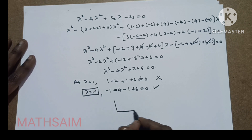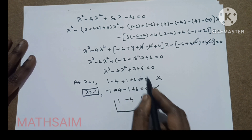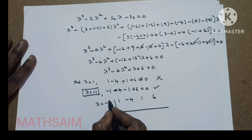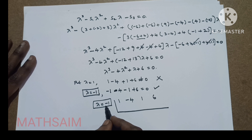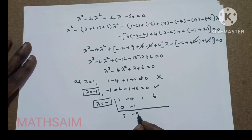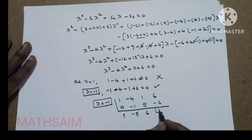We use synthetic division with lambda = minus 1. Write the coefficients: 1, minus 4, 1, minus 6. Bring down 1. Then 1 times minus 1 is minus 1, so minus 4 plus minus 1 is minus 5. Then minus 1 times minus 5 is plus 5, so 1 plus 5 is 6. Then minus 1 times 6 is minus 6, so minus 6 plus minus 6 gives 0.